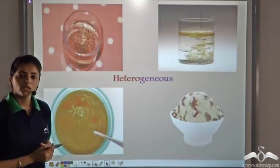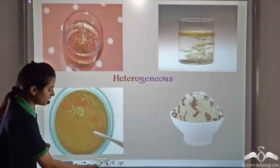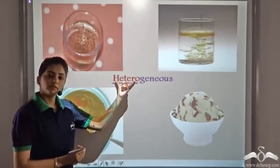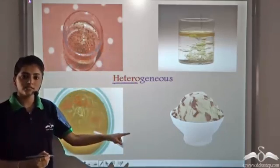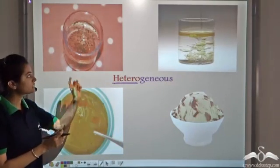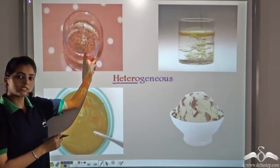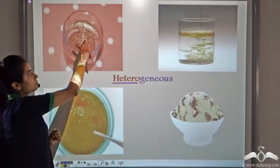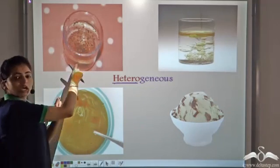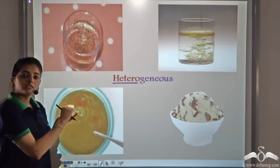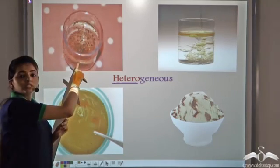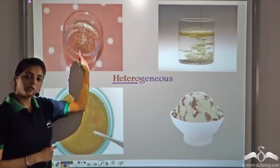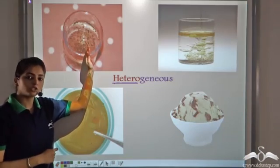Some other examples include substances which are heterogeneous. 'Hetero' means different. So if you observe these cases, you will see that you are able to make out the difference in proportion. In the first case, we have sand dissolved in water. You are able to observe that in some parts sand is more, in some parts we have more of water, and some sand is deposited at the bottom. So this does not look uniform throughout, and since the composition is varying in different proportions, this is a heterogeneous mixture.